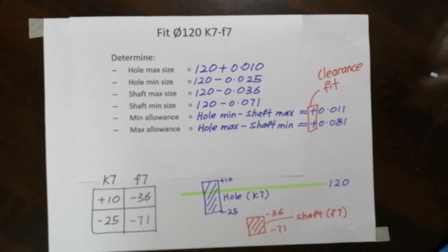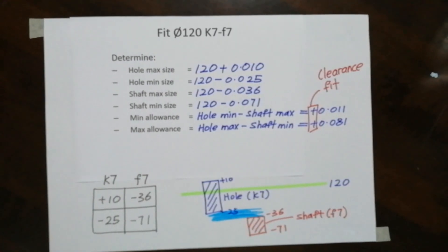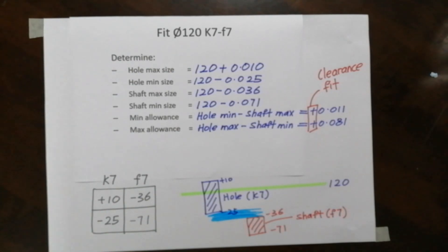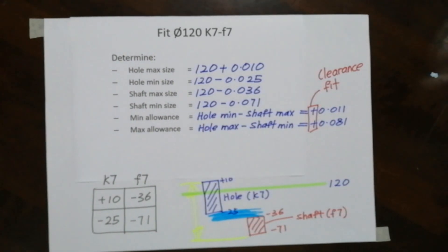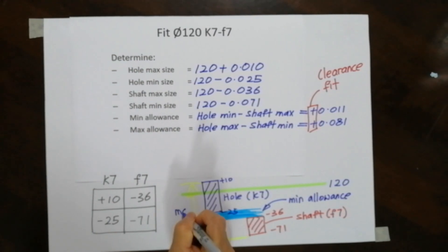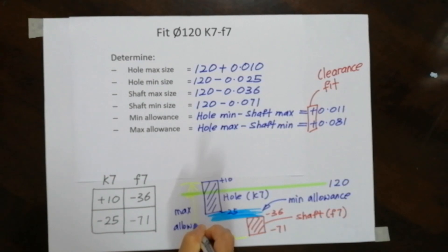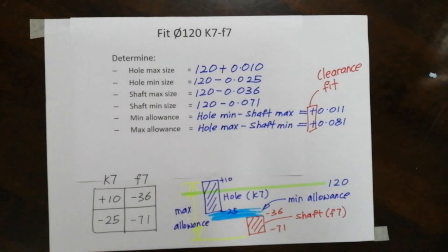Looking at the diagram carefully, you can see mechanically and visually that there is always a gap — this is a clearance fit. The minimum gap is the minimum allowance, and the maximum gap is the maximum allowance. That brings me to the end of the second e-lecture. I look forward to seeing you in the third e-lecture. Bye and have a nice day!